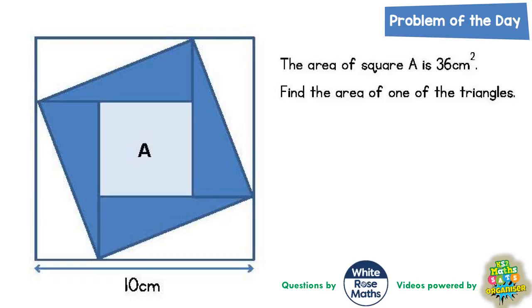Well let's have a look. It says the area of square A is 36 cm squared. Let's take that information and write it on the diagram, so A is 36 cm squared.